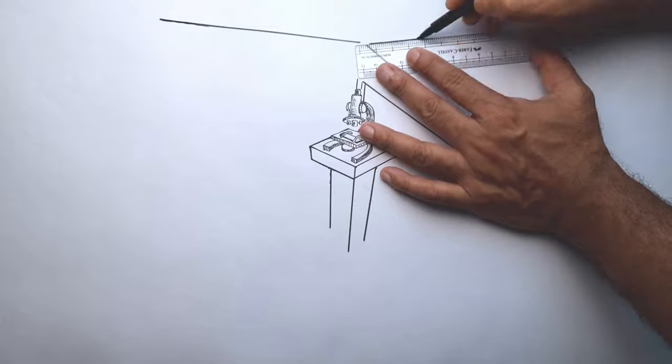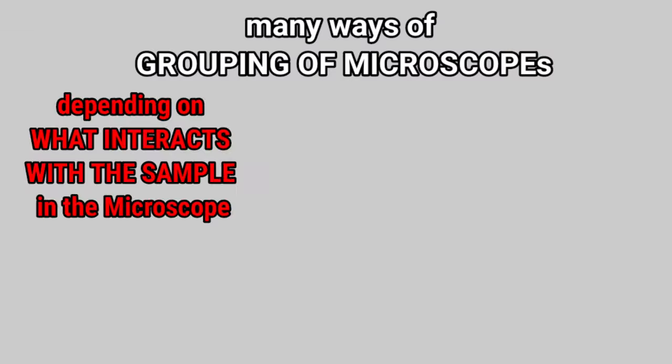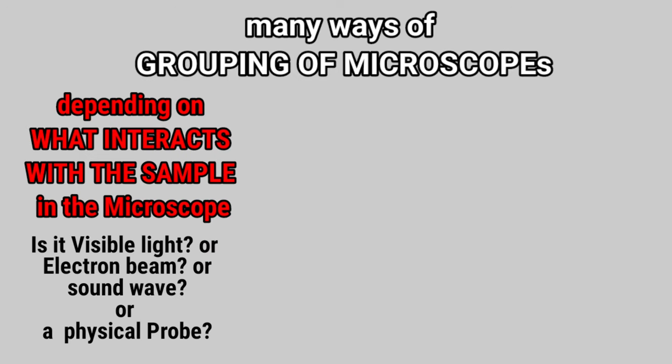Microscopes may be grouped in different ways. One type of grouping is based on what interacts with the sample to generate the image. Is it white light or any other form of wave or any probe?